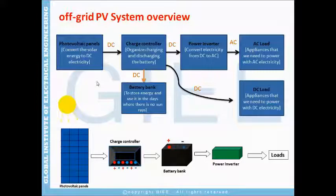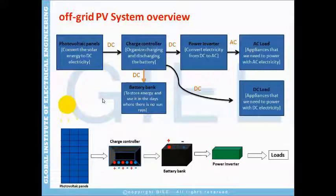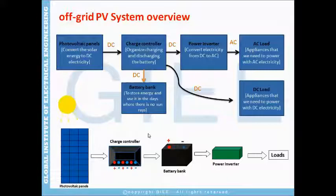The charge controller will regulate current flow between the photovoltaic panels into the battery bank. The battery bank will store energy and use it in the days with no sun rays, or when we want to use electricity at night. We need the battery bank for storage — we store this energy to use it at night or in days when there are no sun rays.